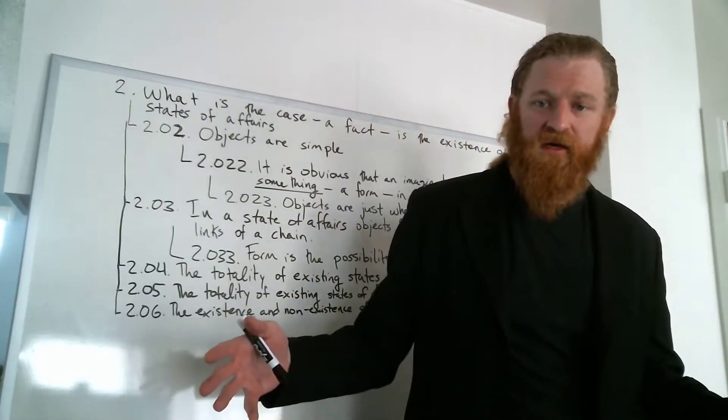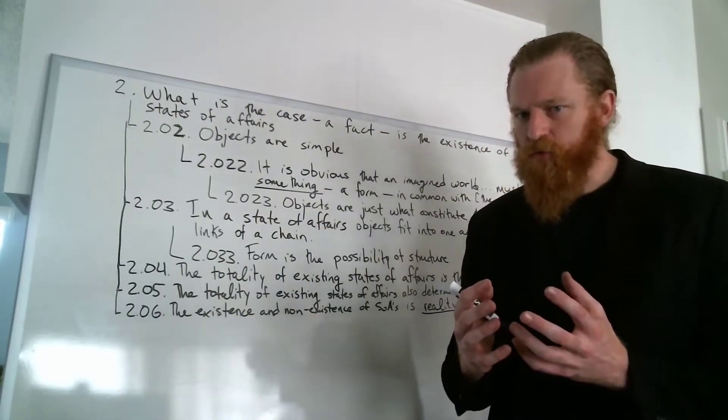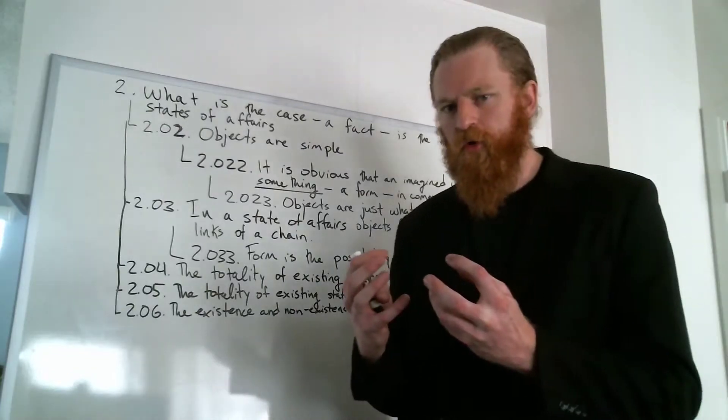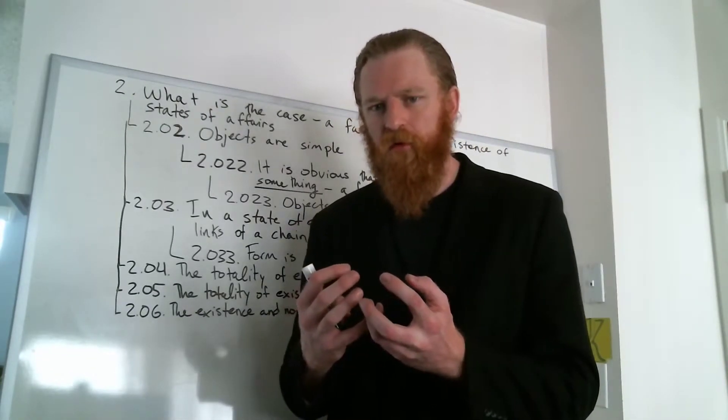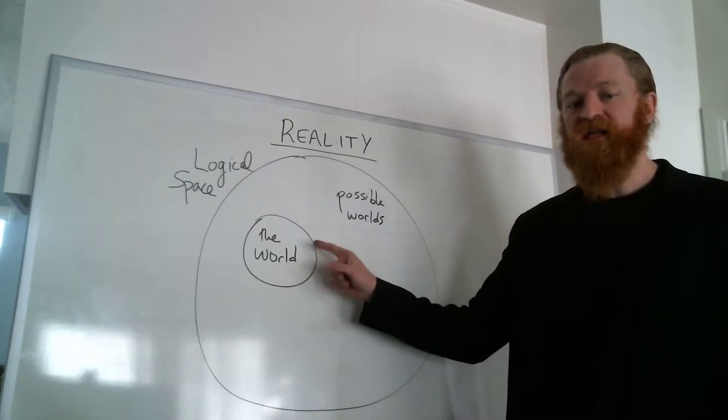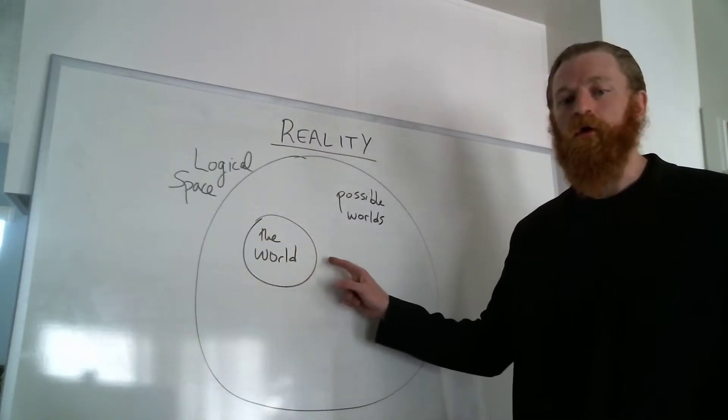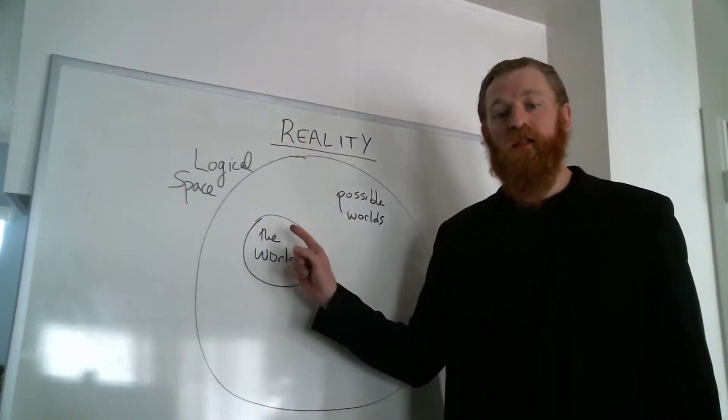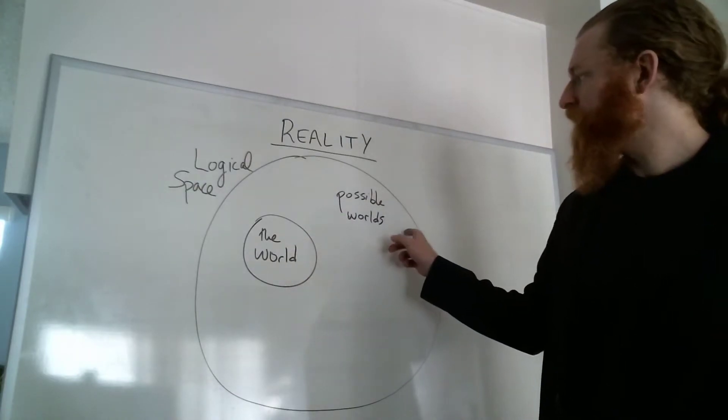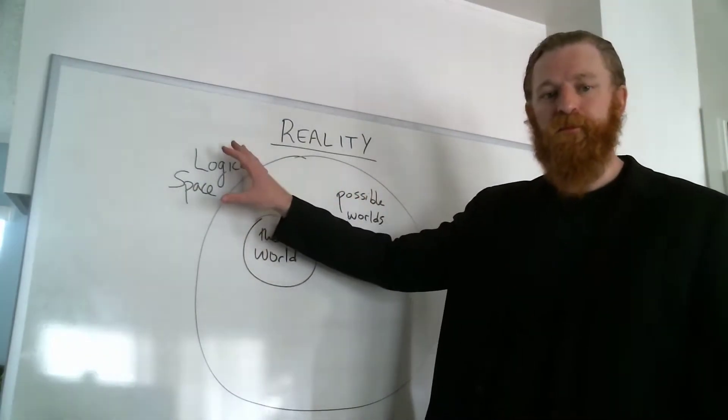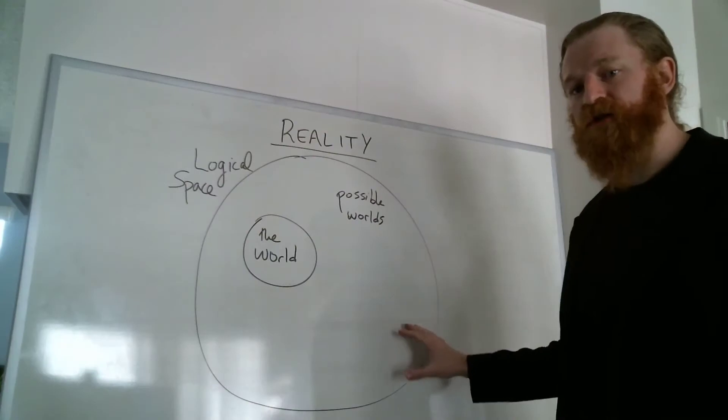If we knew everything about the way this world is, then in the very same stroke we would know everything about all the possible worlds. So the world is all that is the case - the actual world - and what that means is that it's one among the possible worlds determined by the limits of logical possibility or the limits of logical space.